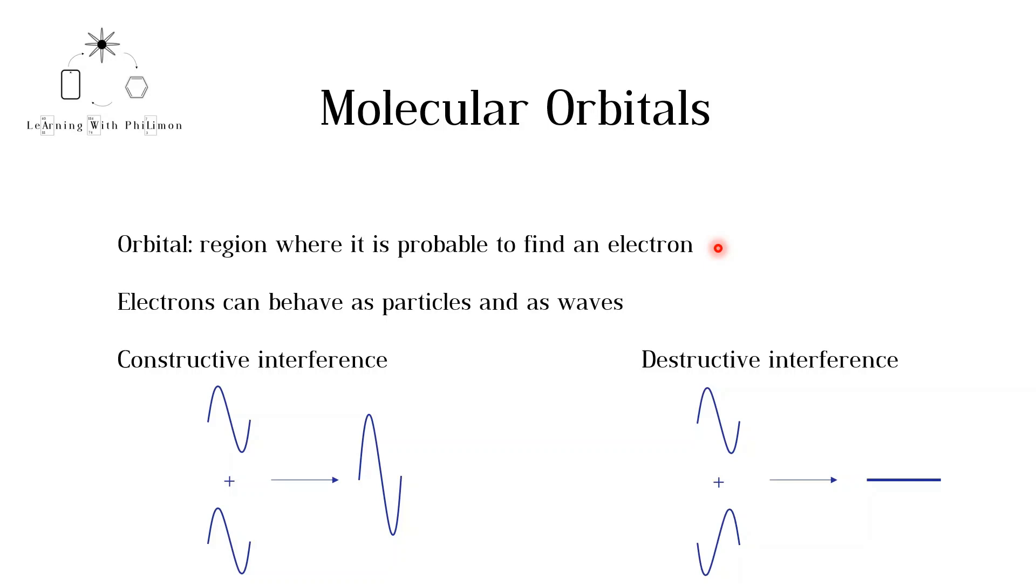This is because electrons exhibit particle-like, but also wave-like properties. When two waves meet, there can be constructive or destructive interference. For more on this effect studied in the physics course, check out the link in the description. When atomic orbitals meet, when two atoms are bonding, a similar effect is seen.